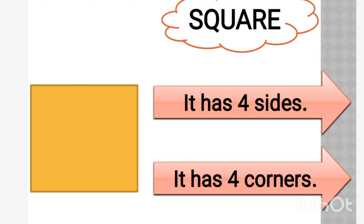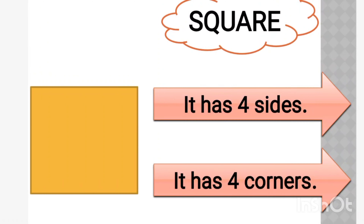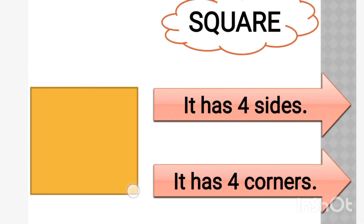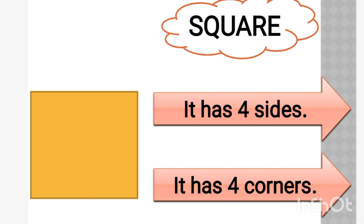These are the four sides of a square. And it has four corners also. We can see the corners of the shape here: one, two, three, four. So it has four corners and four sides.